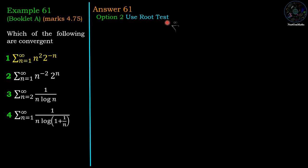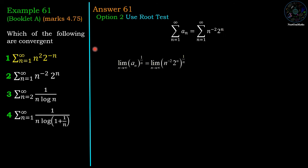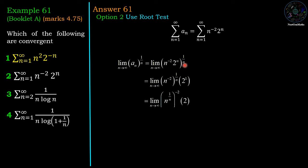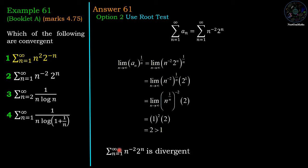For the second option, a_n is equal to n power minus 2 times 2 power n. The nth root of a_n is (n power minus 2 times 2 power n) power 1 by n, giving (n power 1 by n) power minus 2 times 2. Since limit n tends to infinity n power 1 by n equals 1, this limit has value 2, which is greater than 1. Hence by the root test, sigma n equal to 1 to infinity n power minus 2 times 2 power n is divergent. Therefore the second option gives a divergent series.